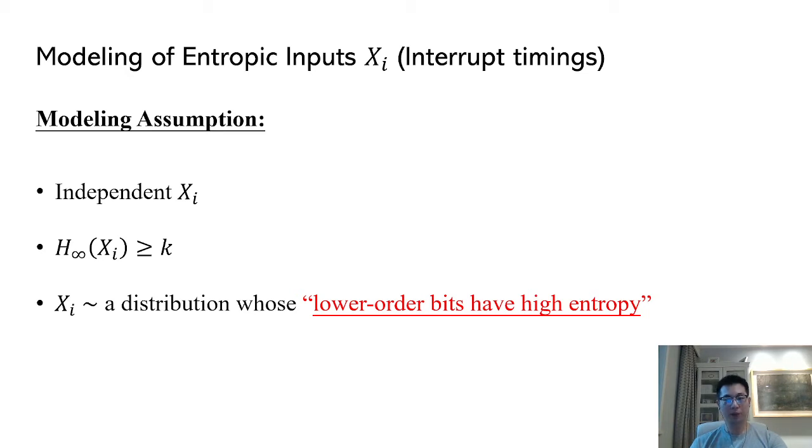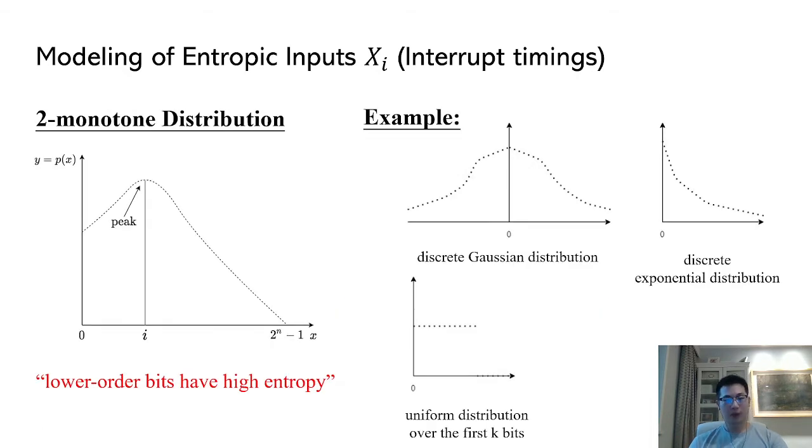Notice that the lower-order bits of interrupt timings change more rapidly than the higher-order bits. So the intuitive requirement is that these distributions should have most of their entropy in the lower-order bits. According to this, we can define a very wide class of distributions which we call two-monotone. Two-monotone distributions are n-bit distributions such that the probability mass function has at most one peak. This is a large class and it includes discrete Gaussian distributions, discrete exponential distributions, and uniform distributions over the first k bits.